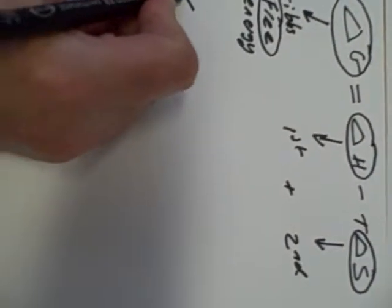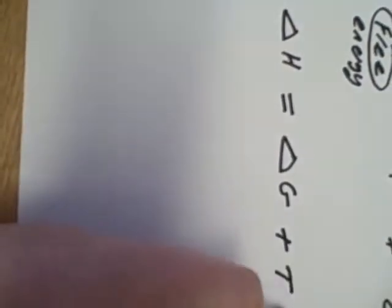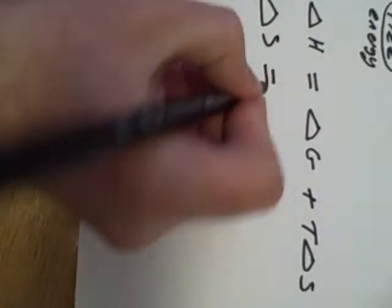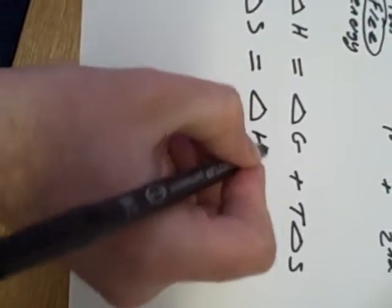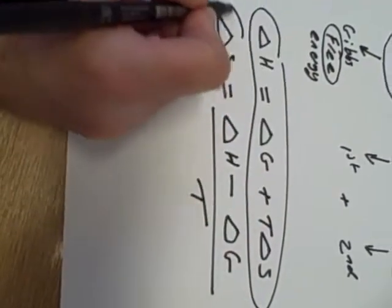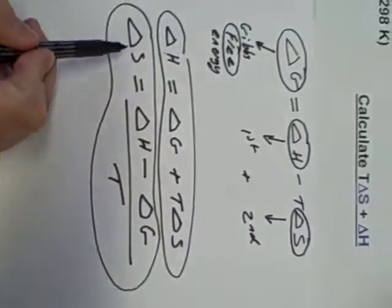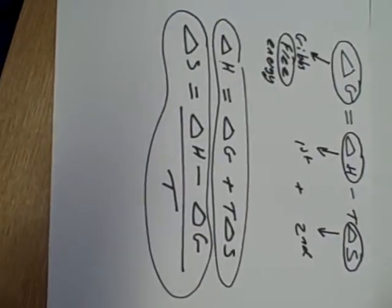So delta H would be equal to delta G plus T delta S. And delta S will be equal to delta H minus delta G all over T. It's really important that you can rearrange this key equation to make delta H and delta S the subject.